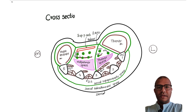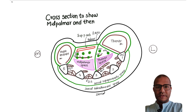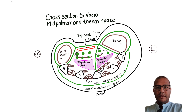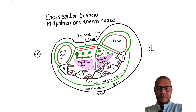Thenar space is bounded anteriorly by the index finger tendons of flexor digitorum superficialis, flexor digitorum profundus, the first lumbrical, and the tendon of flexor pollicis longus — all covered by thenar muscles. Posteriorly it is limited by the metacarpals and interossei. Medially it is bounded by the intermediate palmar septum and laterally by the lateral palmar septum. Also in this diagram we can see the dorsal subaponeurotic space and dorsal subcutaneous space.